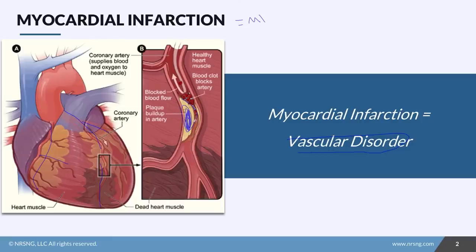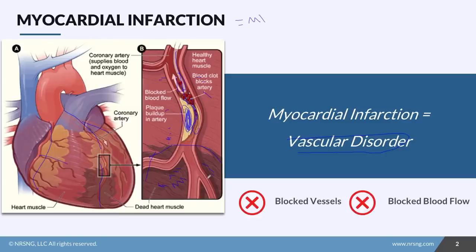As you can see here, the blood cannot flow past the occlusion, and therefore the muscle beyond the occlusion is dying. You can see this nice healthy muscle here, and then you can see this dead heart muscle beyond the occlusion. It can't get oxygen. The problem is the vessels — think blocked vessels, blocked blood flow.